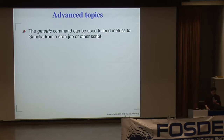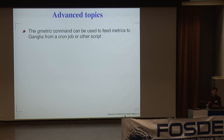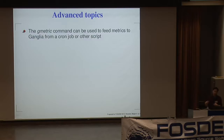For advanced topics: by default Ganglia collects standard metrics, but what if you want to collect your own custom metric that's not standard? We have a command line tool called gmetric where you can feed in custom metrics. Typically you write a script to collect data — for example, get the temperature reading of your host — and feed it to gmetric, with a cron job running it every couple of minutes.